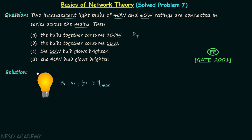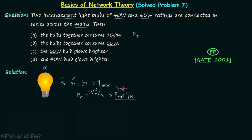If the filament of the bulb offers resistance R and we provide the rated voltage, then the power dissipated equals the square of the rated voltage divided by the resistance of the filament. Since we are providing the rated voltage, the power dissipated equals the rated power. From this, we can conclude that the rated power is inversely proportional to the resistance of the filament. This is an important point we will use while solving the question.